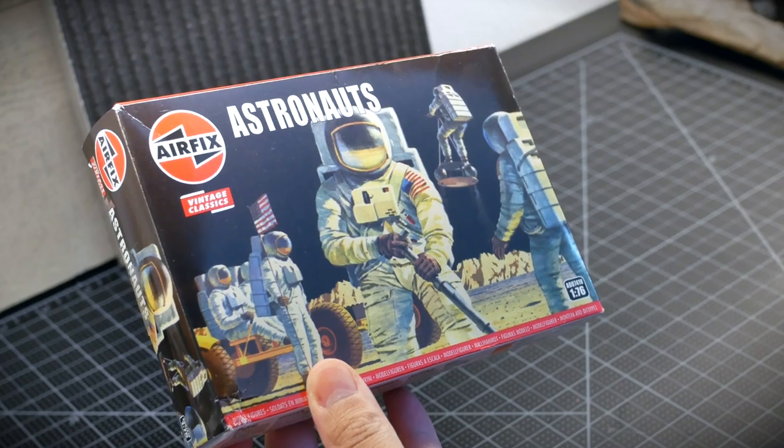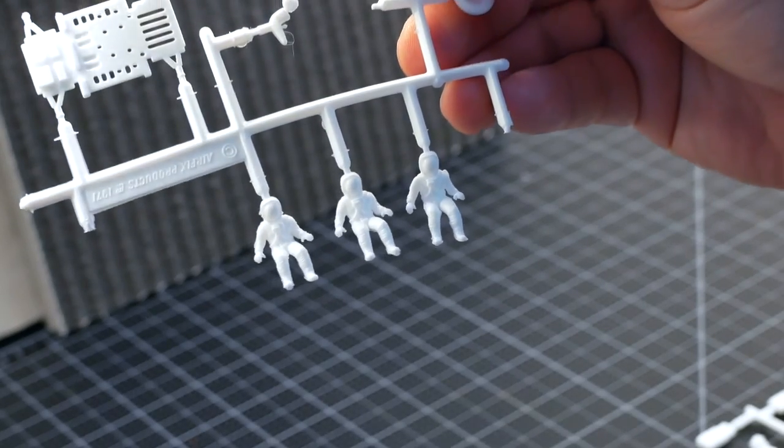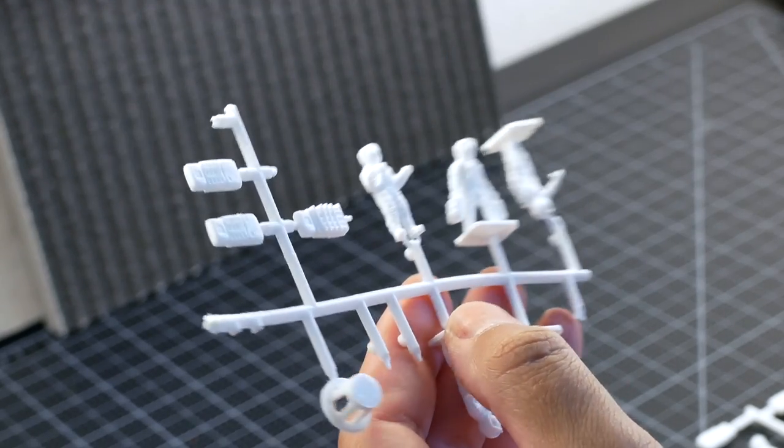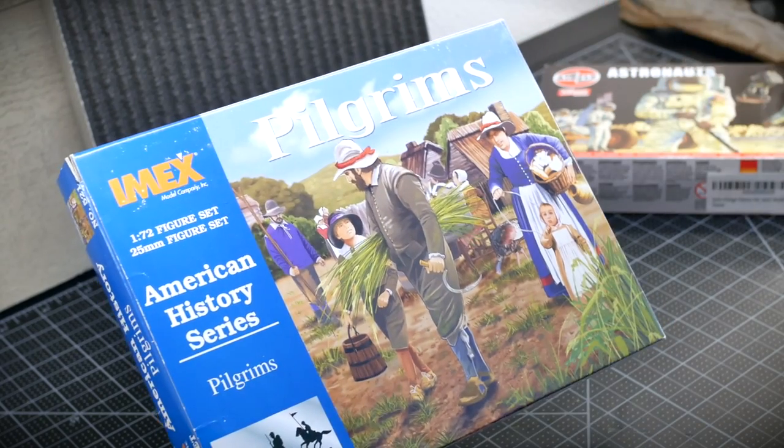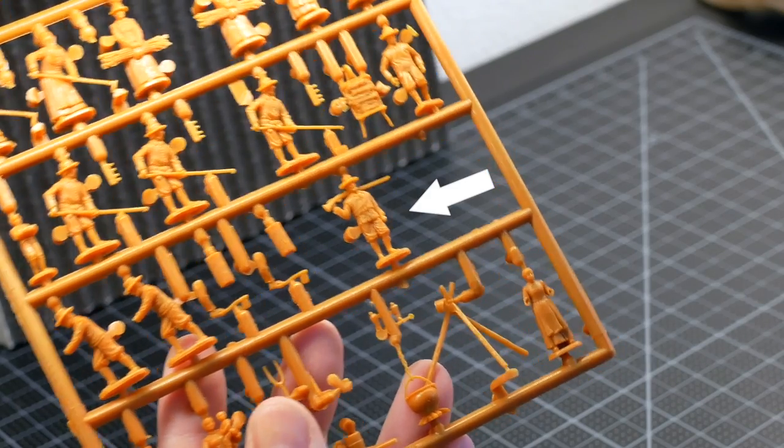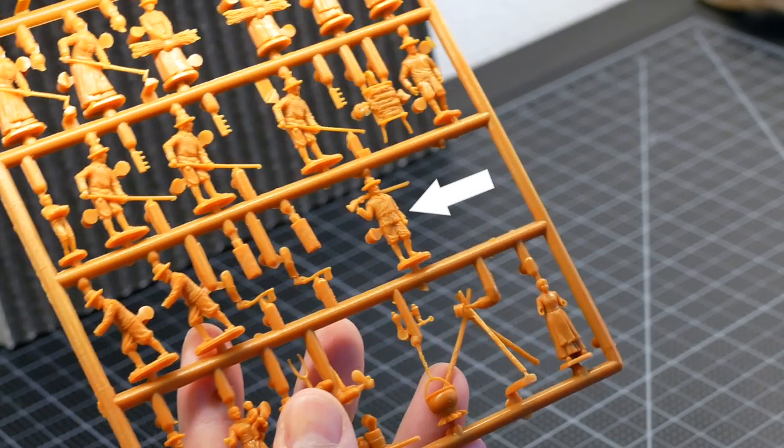The first set contains a few vintage space characters including these gentlemen contemplating the vastness of space, and this fellow in a very awkward pose. I'm also using this pilgrim set from IMAX, specifically this character who seems to be casually keeping watch over his land.